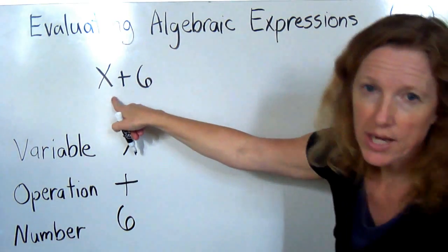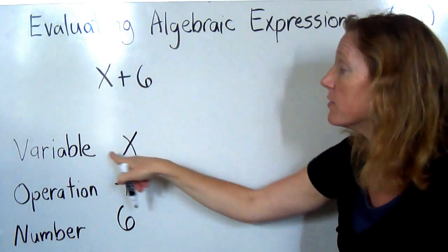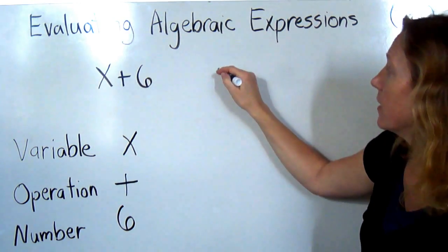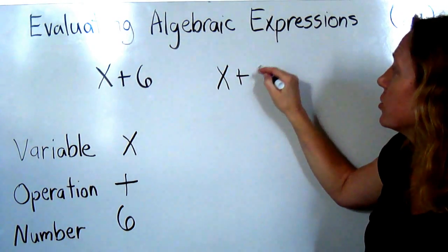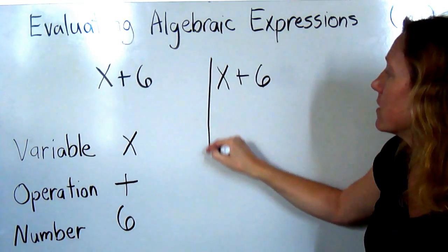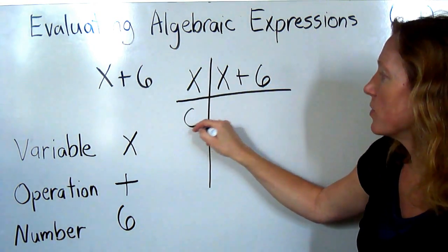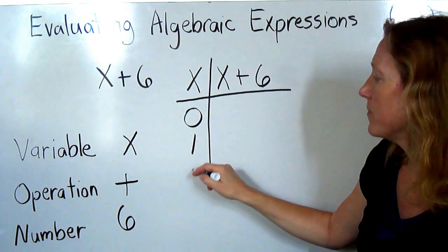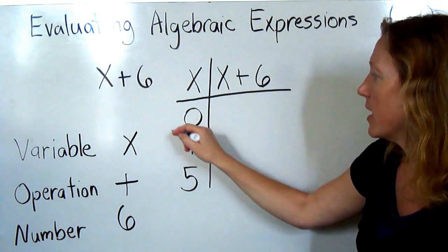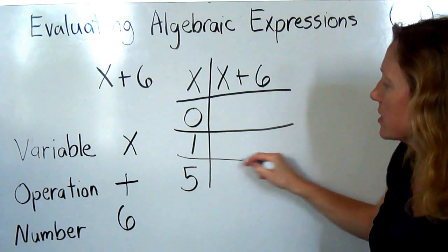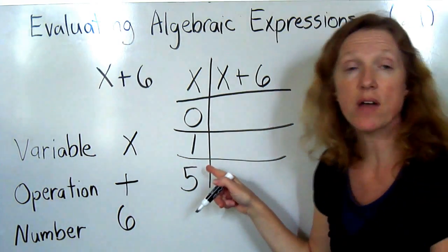So let's evaluate x plus 6 using some different values for x. We'll make a little chart. Let's say that we're going to let x equal 0, 1, and 5. So now let's evaluate the expression for each of these different values.